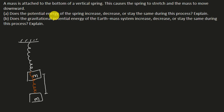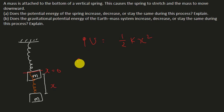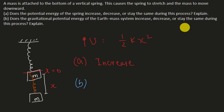The question asks: does the potential energy of the spring increase, decrease, or stay the same during this process? We take an initial stretch x1. From an energy point of view, the spring potential energy increases. But when the mass moves down from the reference point, the gravitational potential energy of the earth-mass system decreases.